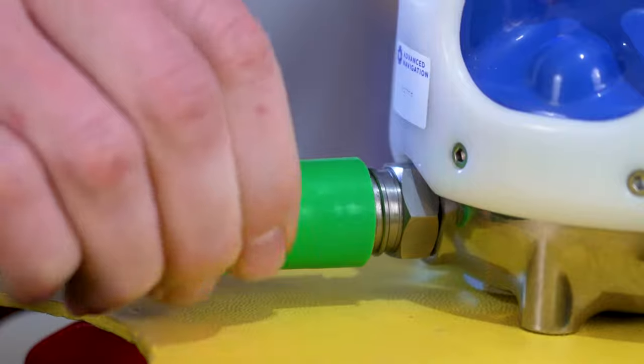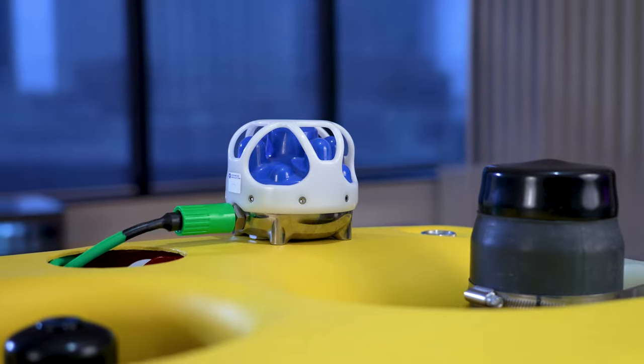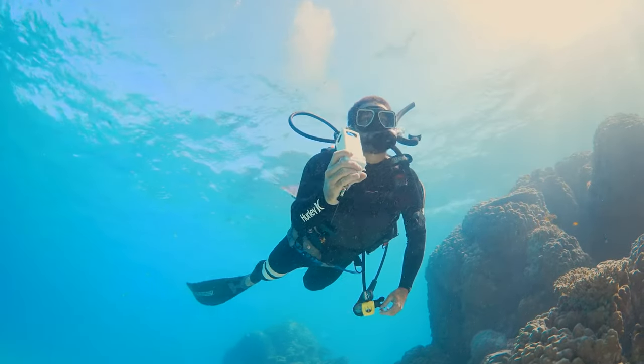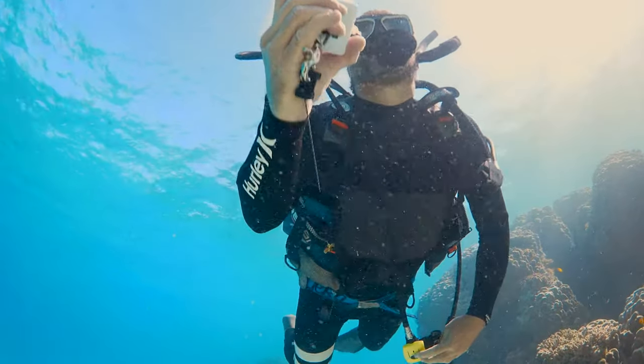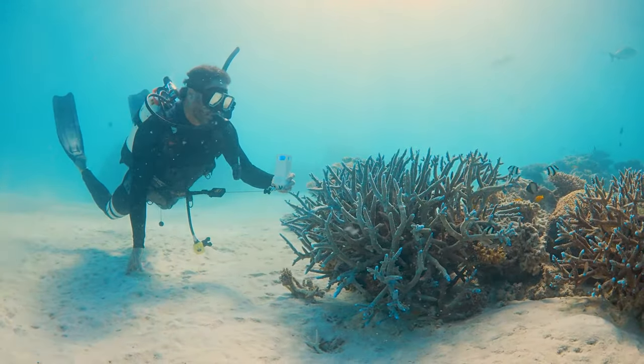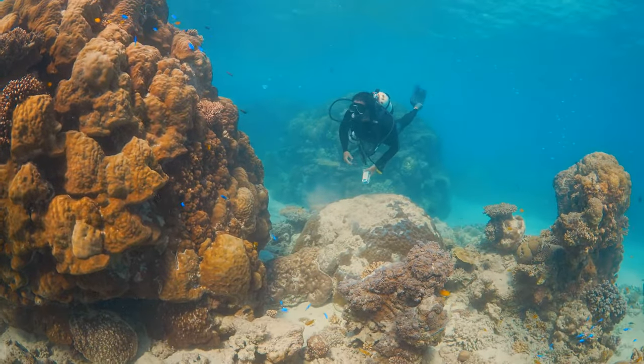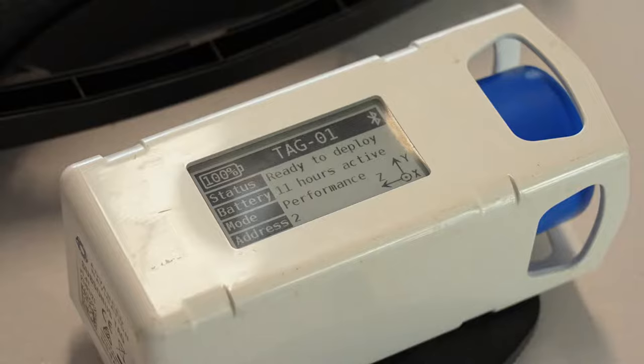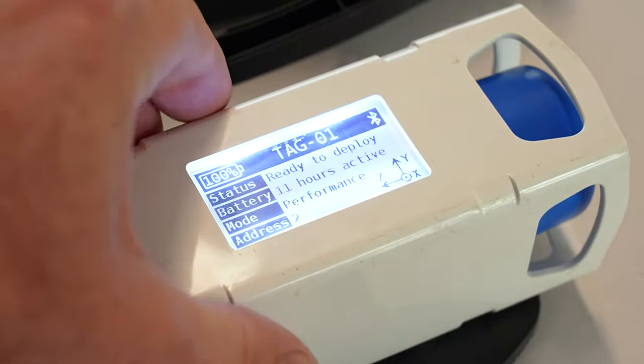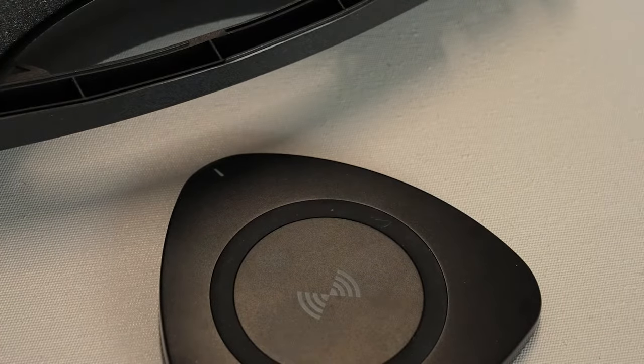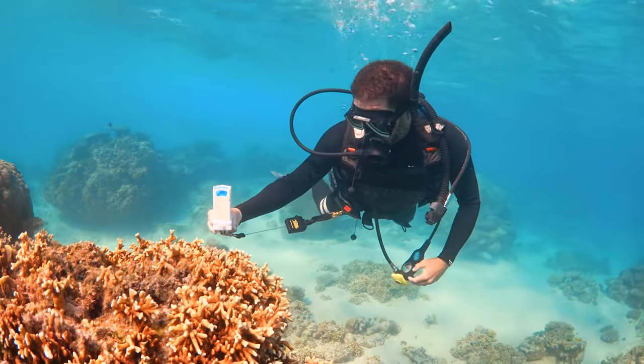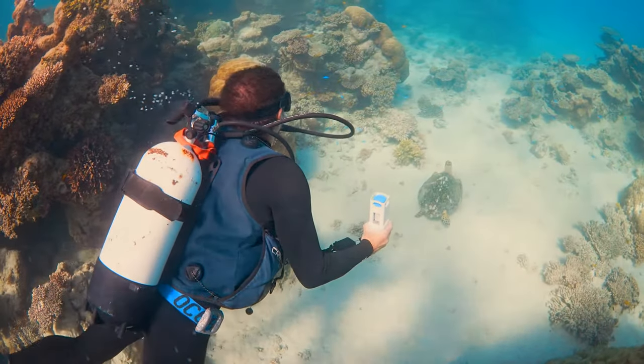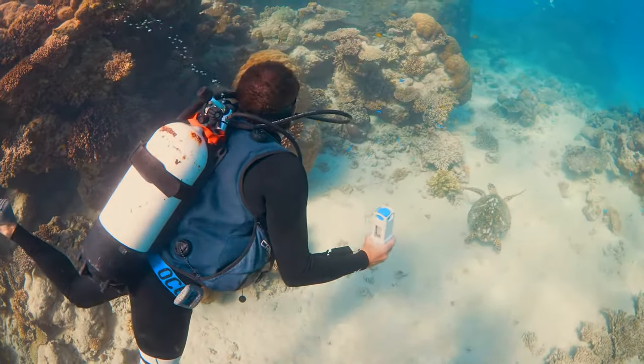To track assets such as divers or subsea infrastructure, Subsonus Tag acoustic positioning transponders are recommended as a simple, cost-effective solution. Ensure the Subsonus Tag is fully charged before being deployed. For optimal performance, make sure the device is placed with the blue transducer pointing towards the surface or tracking Subsonus and away from propellers or thrusters.